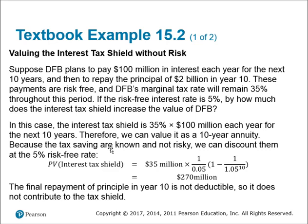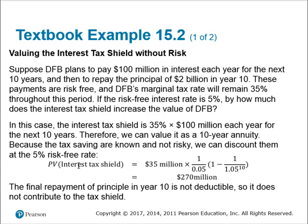Let's look at another example. A company pays $100 million in interest for 10 years, then repays the loan of $2 billion. The payments are risk-free, the marginal tax rate is 35%, and the risk-free rate is 5%. The tax shield is 35% times $100 million, which is $35 million per year for 10 years. We find the present value of this annuity, and plugging those numbers in, the present value of the interest tax shield is $270 million.